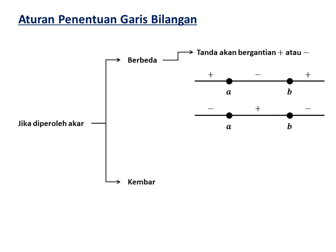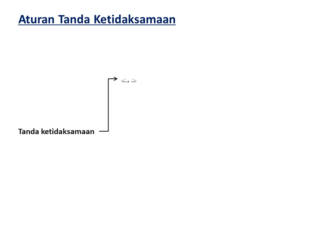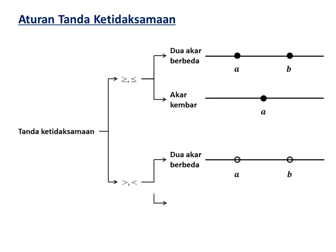Jika kedua akarnya kembar, maka tanda pada garis bilangan akan sama-sama positif atau negatif. Misalkan akarnya adalah A, maka tandanya bisa positif-positif atau negatif-negatif. Tanda ketidaksamaan juga berpengaruh: jika tanda ≥ atau ≤, maka bulatan pada akar-akarnya penuh. Jika tanda > atau < (tidak mengandung sama dengan), maka bulatannya kosong.